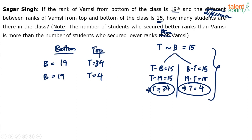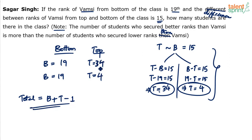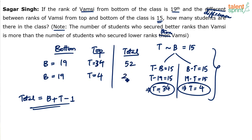The difference between the top and bottom ranks is 15. The total number of students equals rank from bottom plus rank from top minus 1. Since there are two possibilities for Vamshi's rank from top, there are two possible answers. Total = 19 + 34 − 1 = 52, or total = 19 + 4 − 1 = 22. So the two possible answers are 52 or 22.